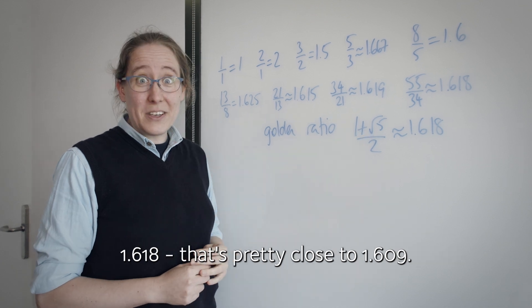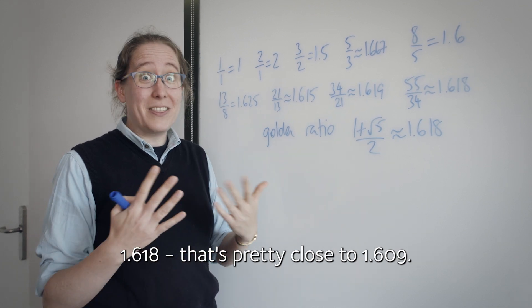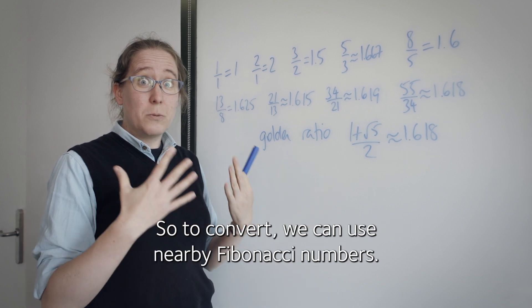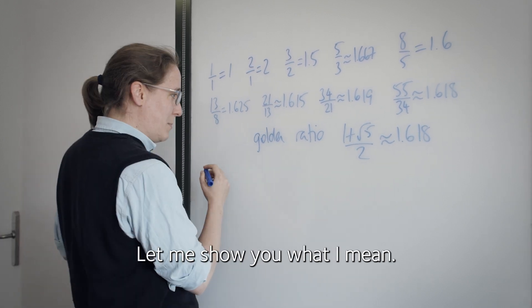1.618, that's pretty close to 1.609. That's why there's this connection with miles and kilometers. So to convert, we can use nearby Fibonacci numbers. Let me show you what I mean.